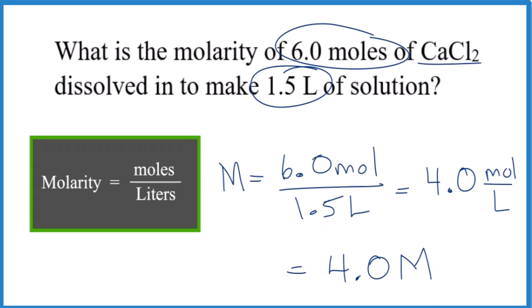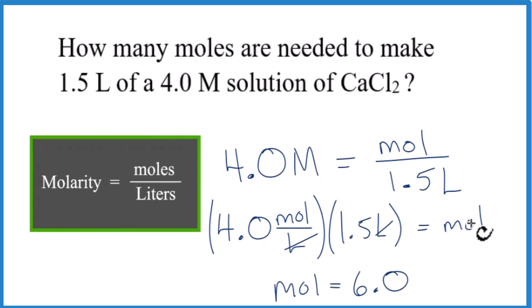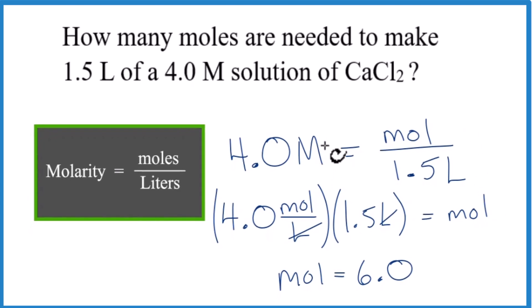Note that sometimes you'll get problems where you're given molarity and liters and asked to figure out moles. In this case, you just put these numbers into the equation and solve for moles. Note that I changed molarity here, the big M, to moles over liters. It's the same thing. These are just the units for molarity. Now I can cross out the liters. I'm left with the moles, which is what I'm looking for. So in this case, we'll end up with 6.0 moles.